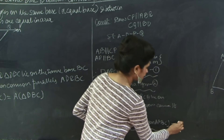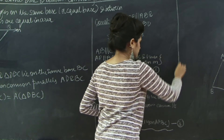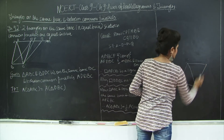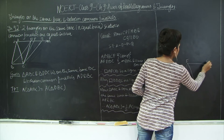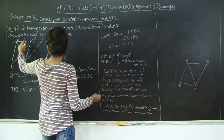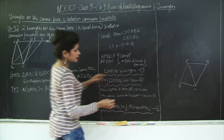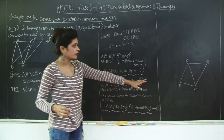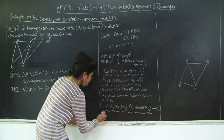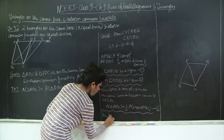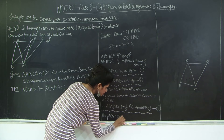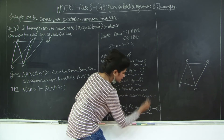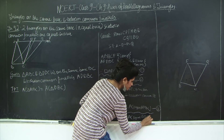Similarly, taking parallelogram DQBC, its diagonal is DC. Therefore, area of triangle DBC is equal to half of the area of parallelogram DQBC. Let us mark this as statement 4.